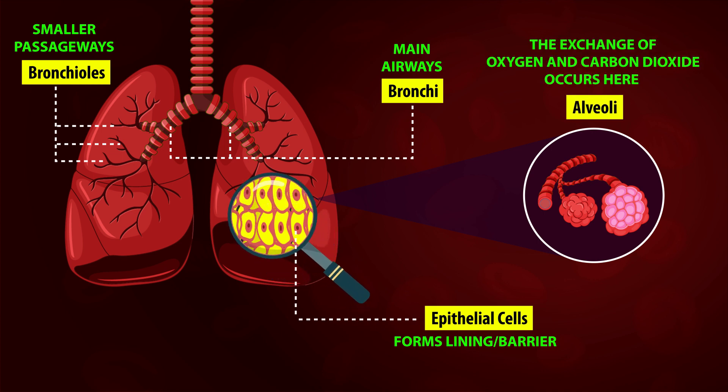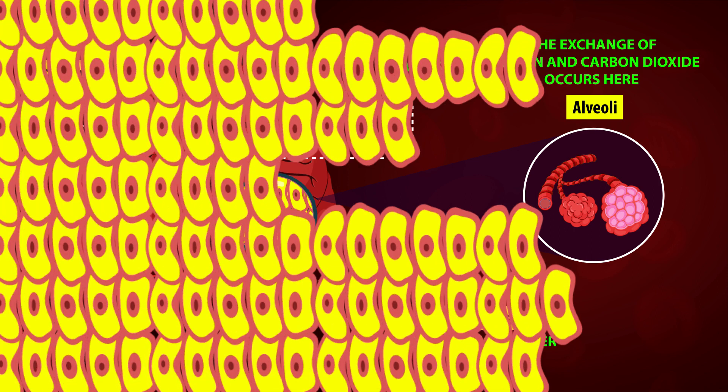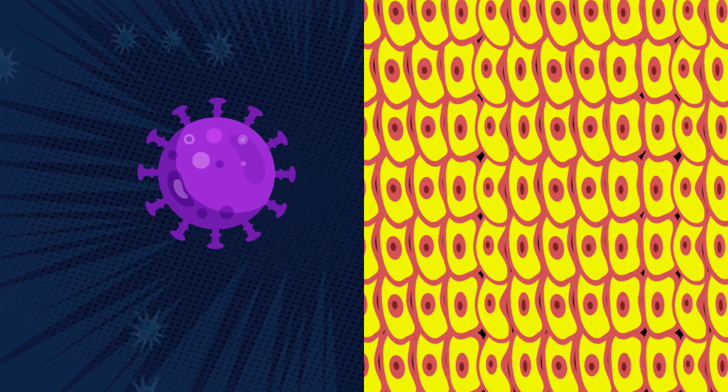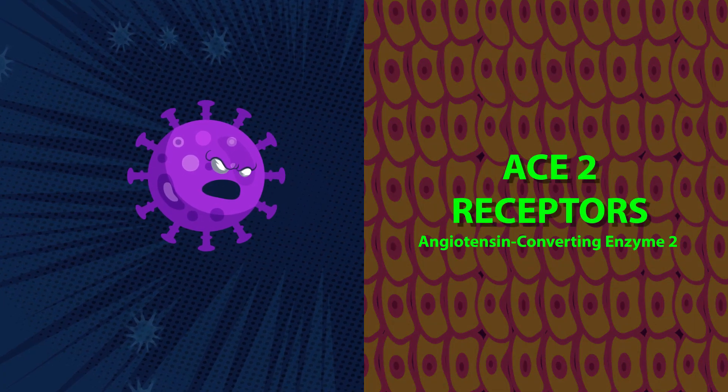Epithelial cells are like the safety shields of the body, forming a covering of all the body's surfaces. Unfortunately, they are prime cellular targets of the novel coronavirus because of the ACE2 receptors which act as entry points.